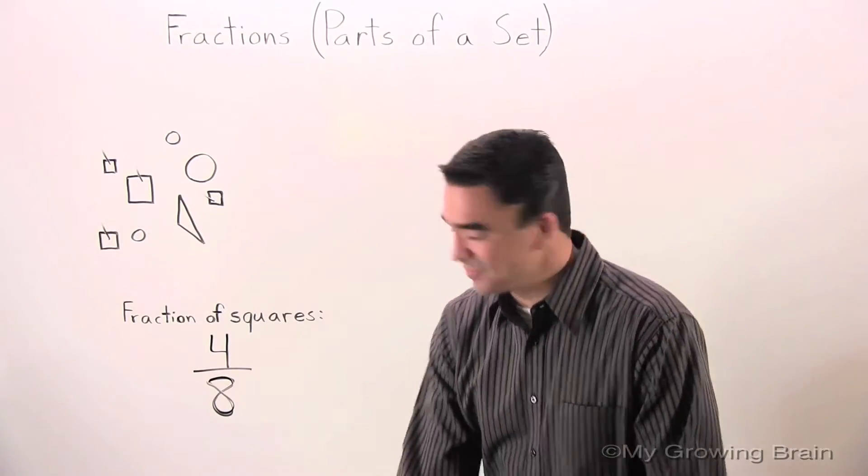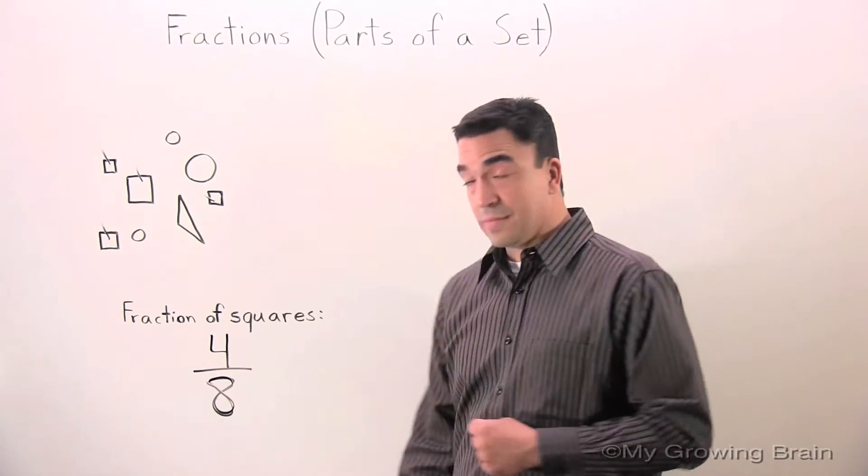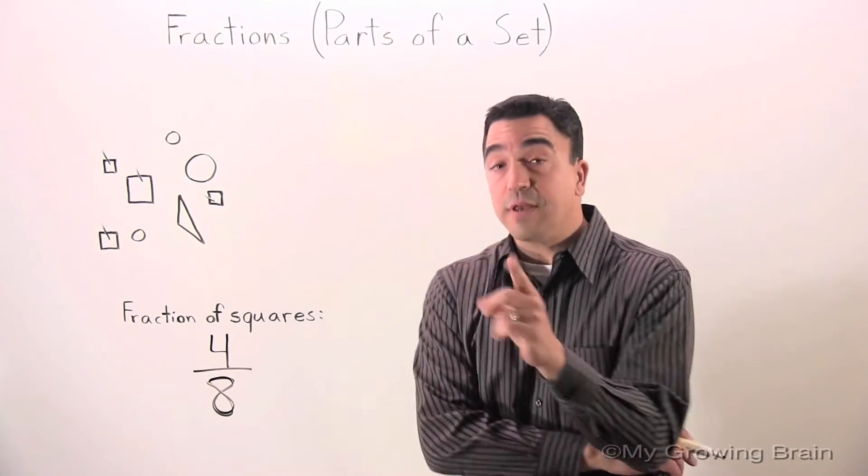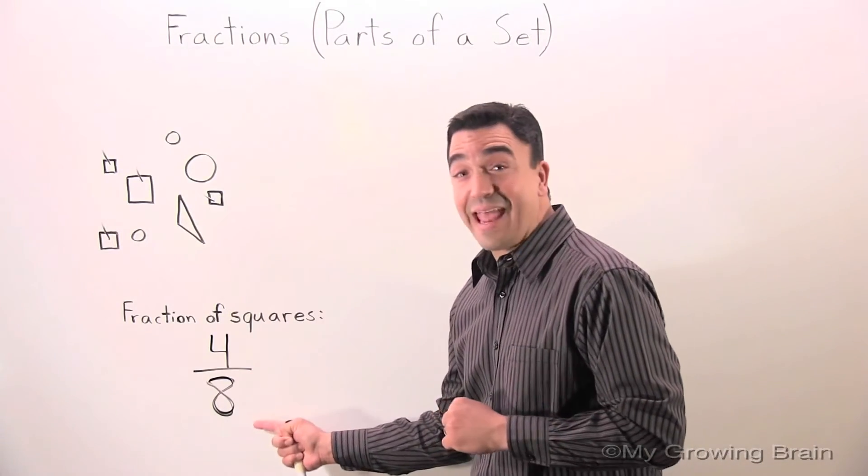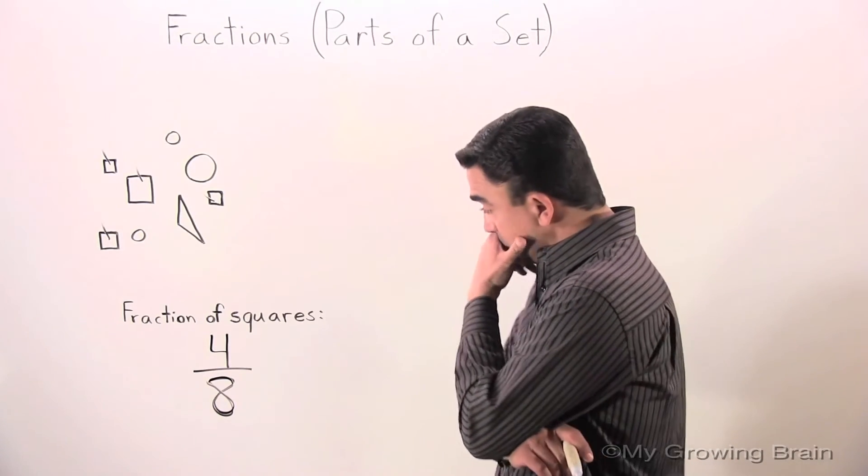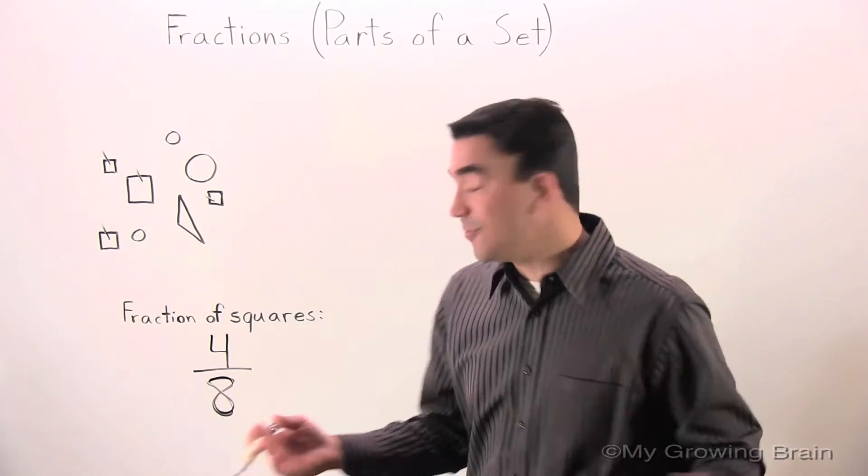But, we're not done. We need to simplify 4 eighths. How are we going to do that? I'm going to think of a number that can go into both 4 and 8 evenly that's greater than 1. So, how about 4? Let's do it.